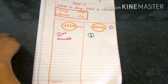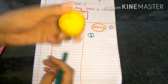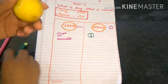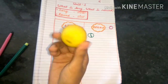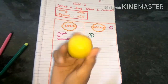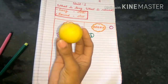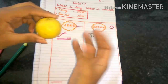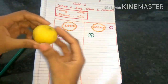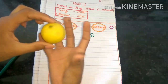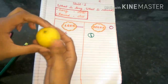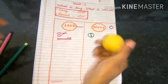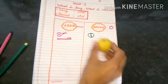Our next object is this. What is this? This is a lemon. Yes. So how is it looking? Is it looking round or long? Long or round? Yes, this is round. So let's draw it on the round side.